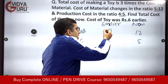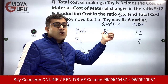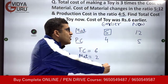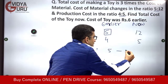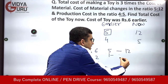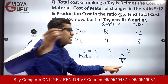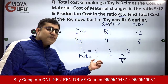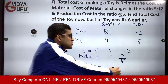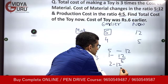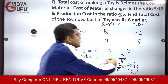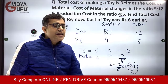Now let's apply the ratio. If the cost of material was Rs. 5 earlier and it has become 12 now, using simple unitary method: if cost was Rs. 1 earlier, it becomes 12 by 5 now. But the material cost was Rs. 2, so for Rs. 2 it will be 12 by 5 into 2, which equals 24 upon 5. That is the cost of the material now.